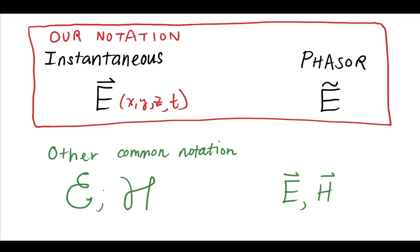If you're using another book or you crack open another electromagnetic text, often the instantaneous form may have these fancy scripts for the instantaneous field and they may use this E and H for the phasors. But for us, if you're using this Oolabee textbook or in my class, we're going to use this E with the arrow for instantaneous and our phasor is going to have a tilde on top of it.